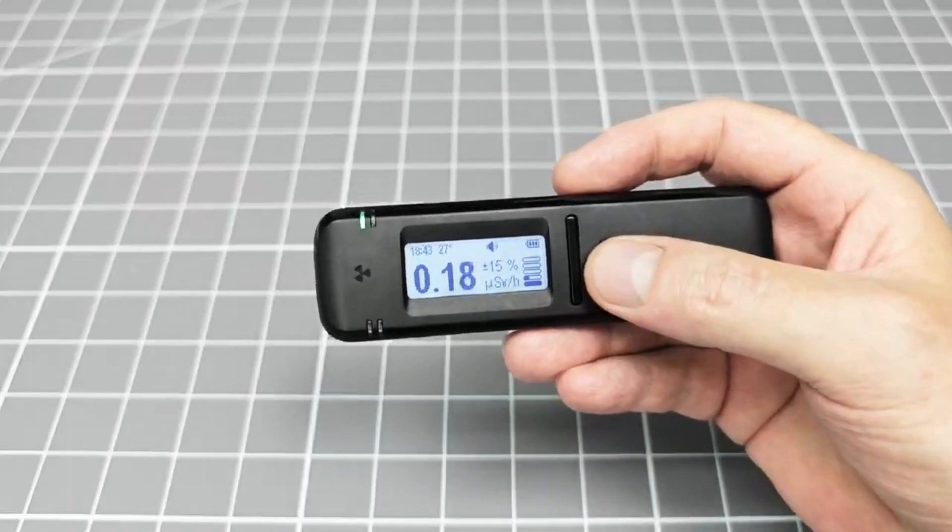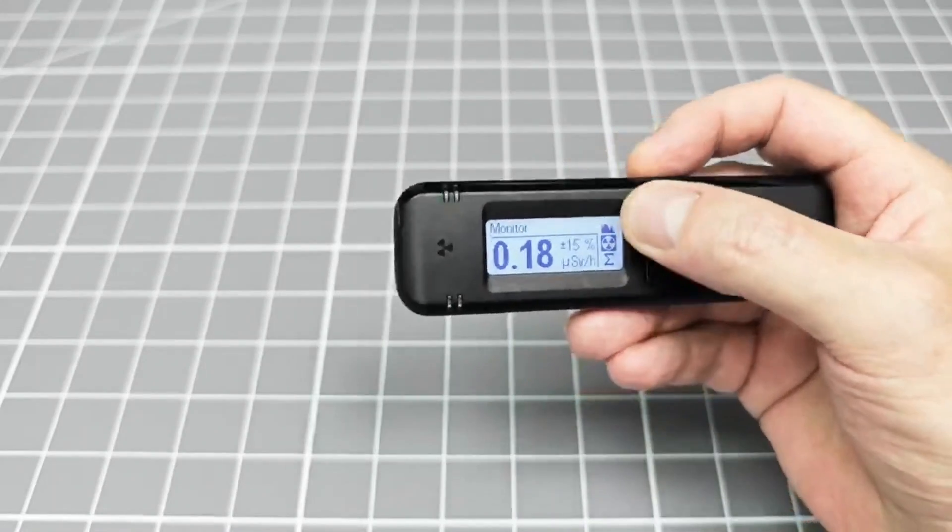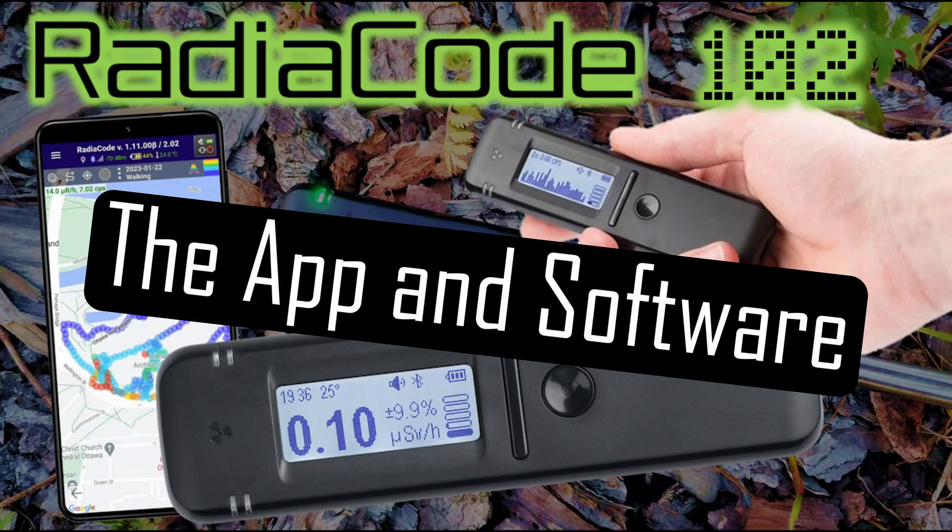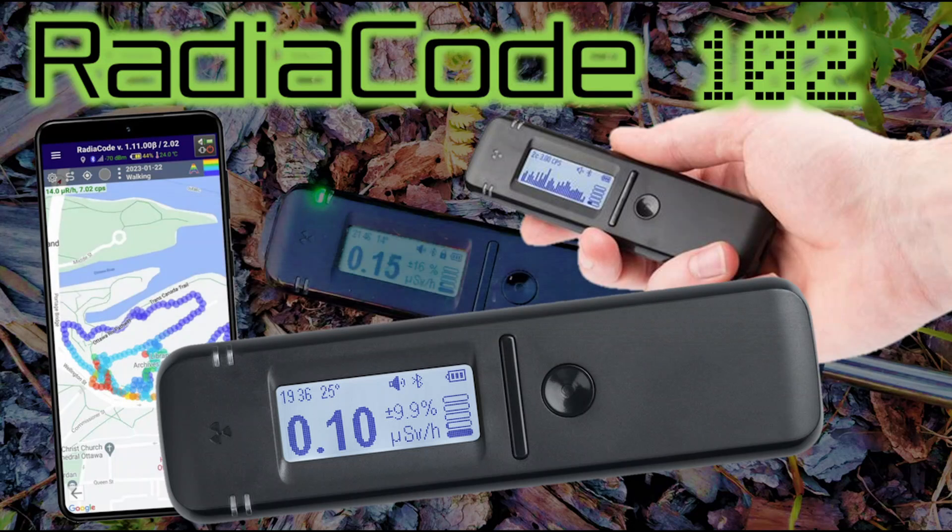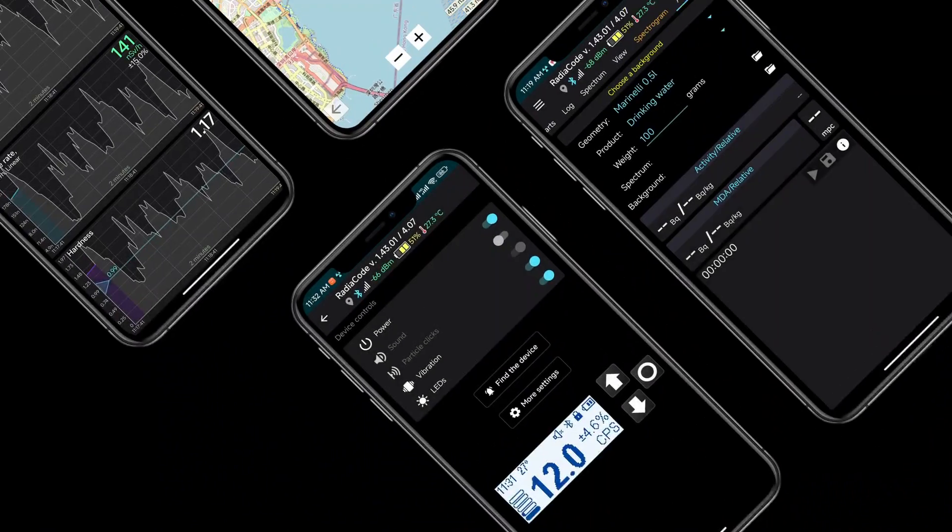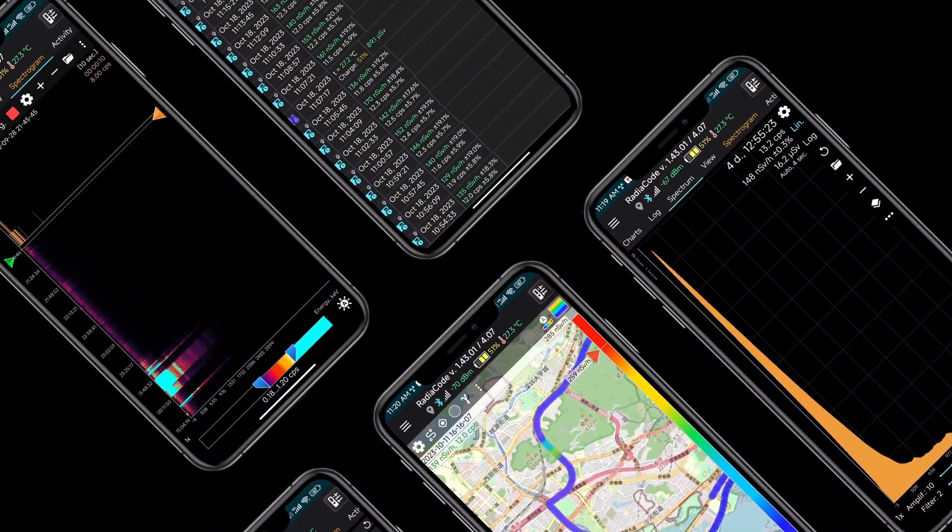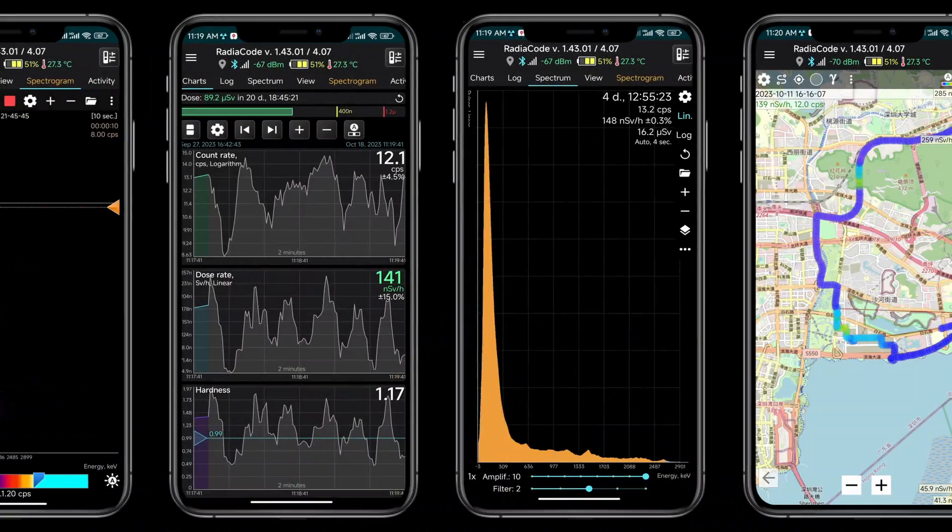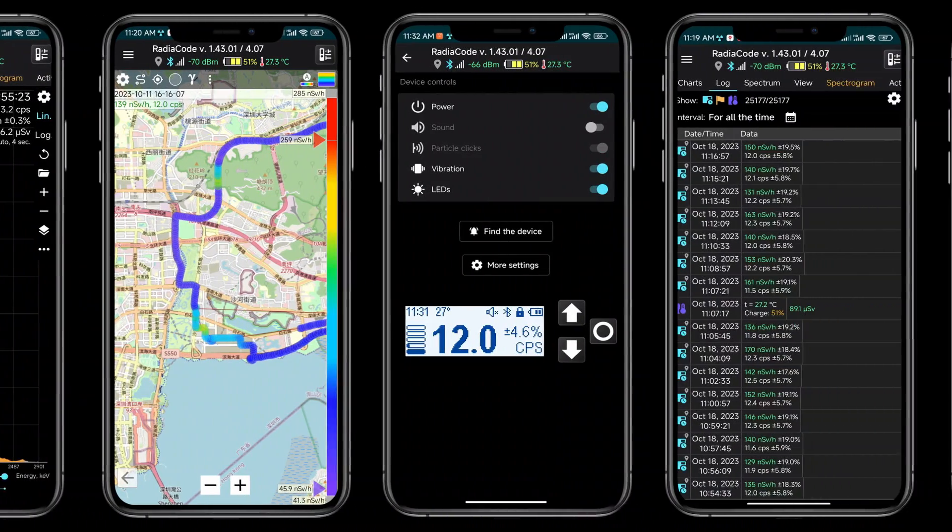Anyway, enough of the background information, let's talk about what this product can actually do. The RadioCode can connect to an Android application via a Bluetooth connection. There also appears to be an iOS app in development. There is also a PC application too, and this connects to the device via USB. The included smartphone application has a lot of features and is one of the real highlights of this product, albeit a little bit clunky.